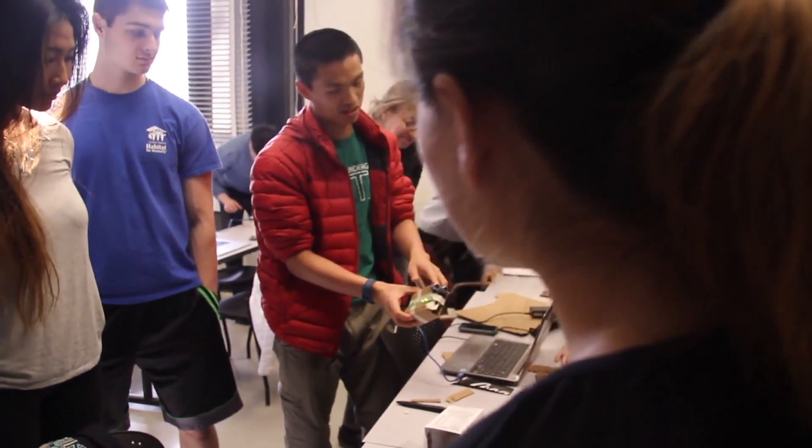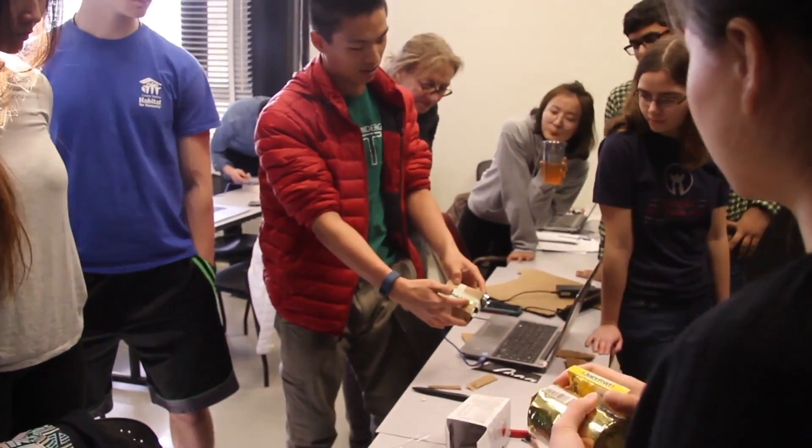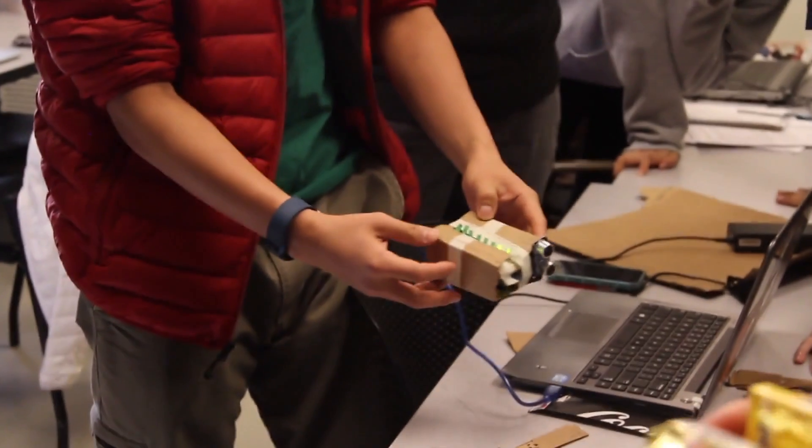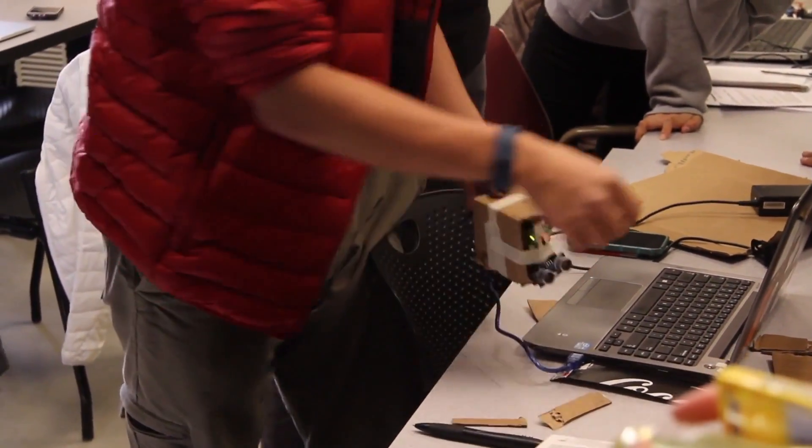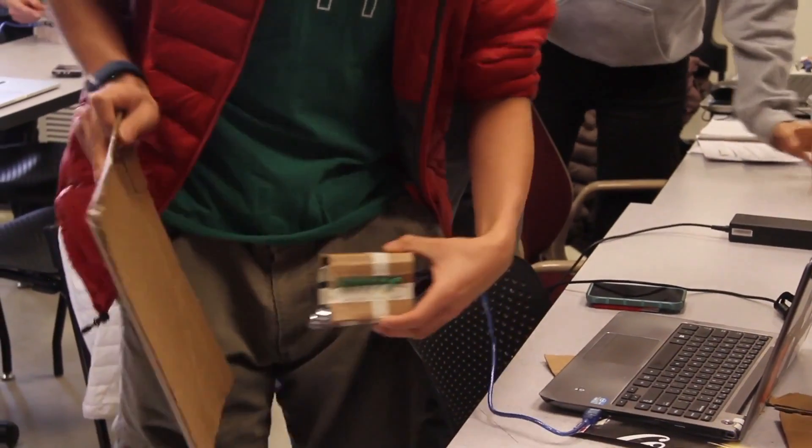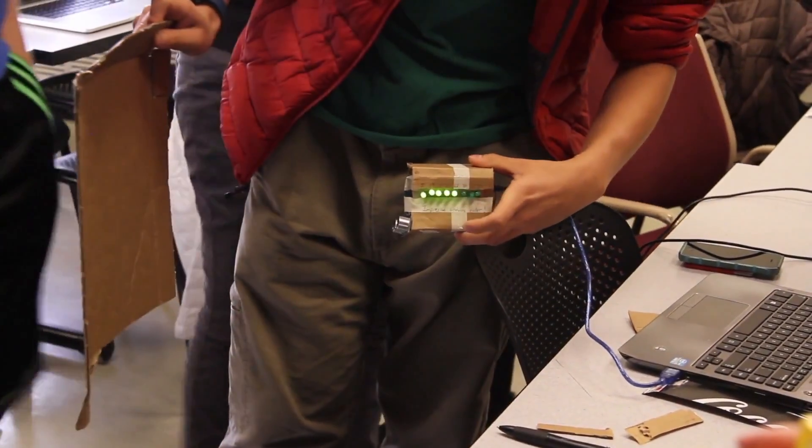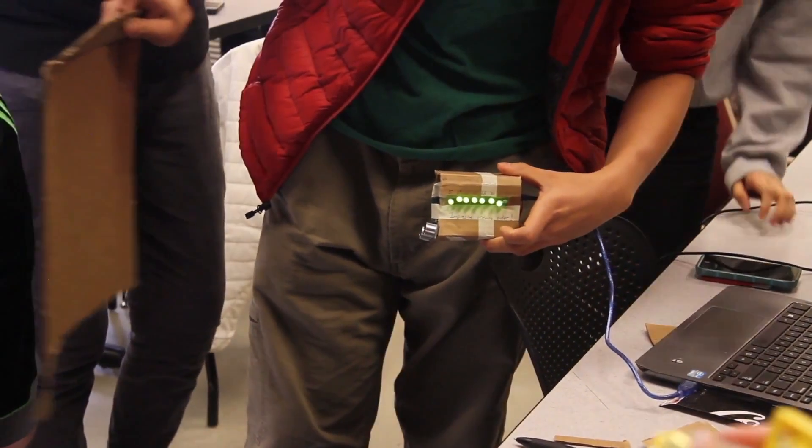So this is like an ultrasonic sensor, and then it can tell distance. So I set it up with a series of lights. If you have this piece of cardboard over here, it shows that it's like five centimeters of light. If you leave it further away, more lights show up.